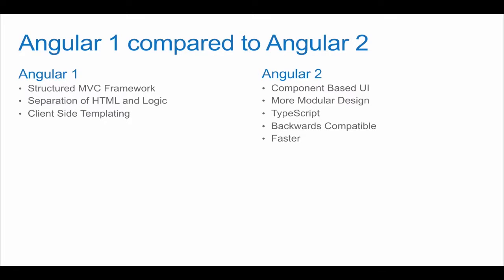Just to recap quickly with Angular 1 — it is definitely a structured framework; that's kind of what it brought us: the separation of HTML and logic, and client-side templating. Angular 2 brings a component-based UI, so that's the idea of modular design, much more of that 'do not repeat yourself' approach with pieces you can add to your application. Also TypeScript — it offers the ability to write our code in TypeScript. It's also very well built in the sense that it's backwards compatible, so you can have an Angular 1 application and add Angular 2 code onto it. And it is faster — Angular 2 is about two to three times faster on benchmarks when it comes to templating and putting HTML and JavaScript together.